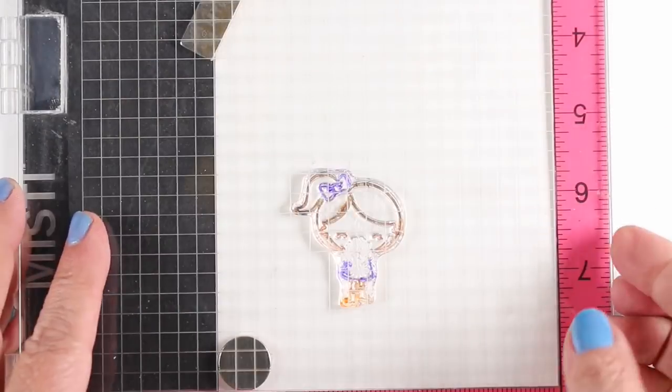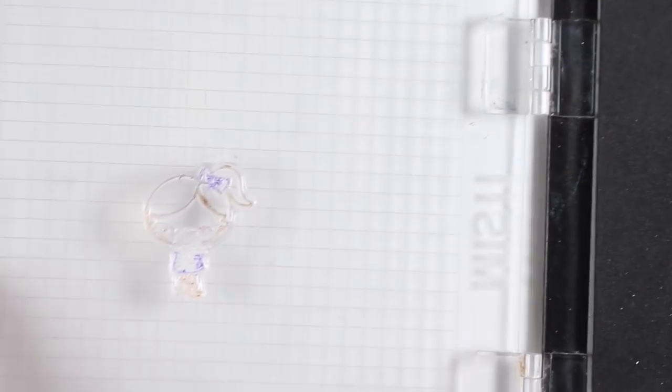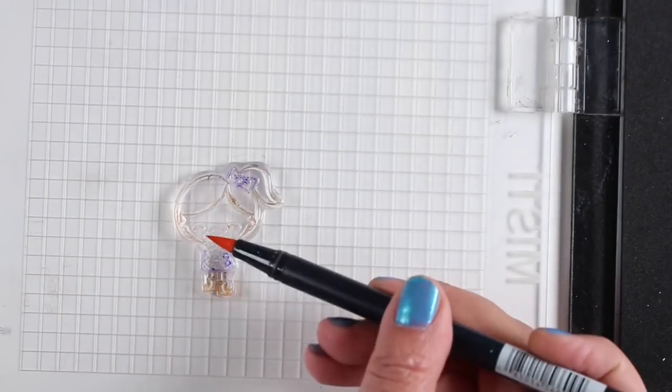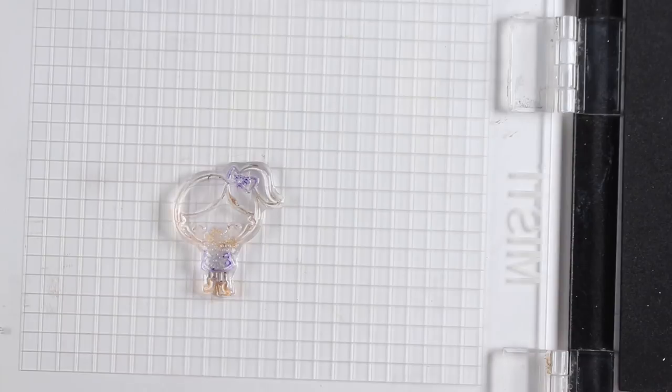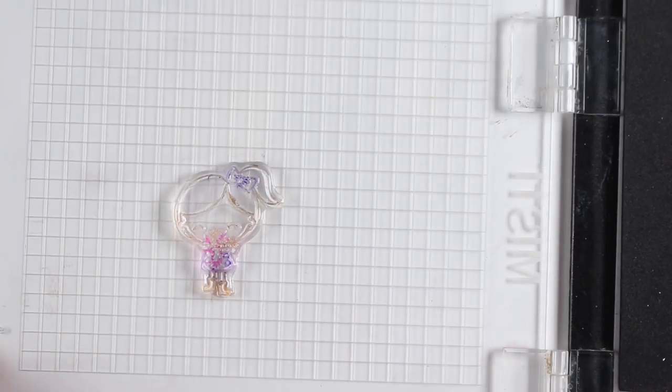And you can either do a bunch of the coloring and then stamp a whole lot of it, or just stamp bit by bit. And as you're doing it, you can also see what parts are missing. So the feet, the little boots, didn't stamp very well. I was having trouble with that throughout this project, so I'll have to do some of that by hand when I get finished anyway.